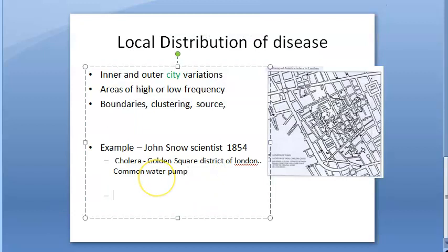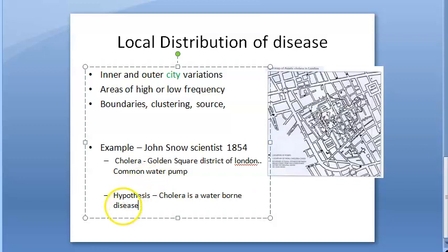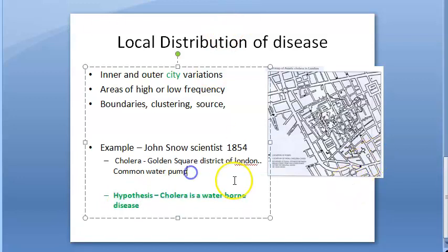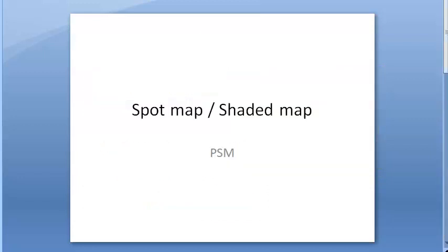Basically, John Snow came to the hypothesis that cholera is a waterborne disease — that was his conclusion, and that is a significant finding. He identified a common water pump in Broad Street. There is much more detail in the textbook about Broad Street. Meet you in the next video.